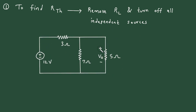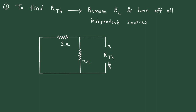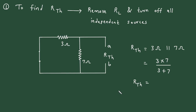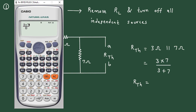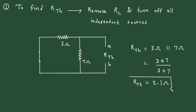Now here in this circuit, the value of RL is this, and let's say this is terminal A and this is terminal B. We will turn off this voltage source — when we turn off the voltage source, it gets replaced by its internal resistance, that means it gets short circuited. Resistance between terminal A and B will be RTH. RTH is equal to 3 Ohm parallel with 7 Ohm, so this will be 3 into 7 divided by 3 plus 7, which gives 2.1 Ohm. This is the value of RTH.